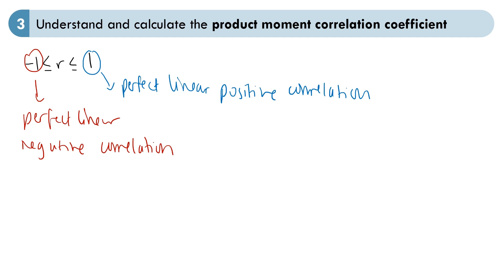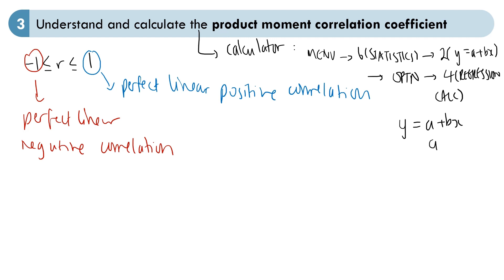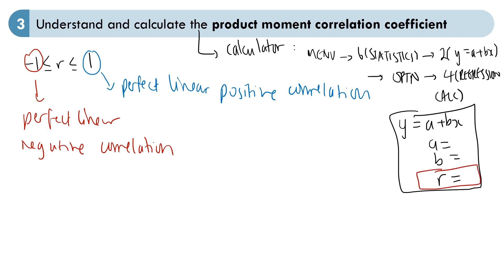In the exam, you'll be expected to calculate the PMCC from your calculator. On your Casio calculator, go to Menu, then press 6 for statistics. That opens a menu where you select 2 to get the y equals a plus bx linear model. You then get a table to input your data into. Once you've inputted your data, press the Option button, then press 4 to get your regression calculations. That brings up a menu showing y equals a plus bx, the value of a, the value of b, and also the value of r — this is the PMCC of your inputted data.